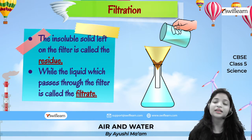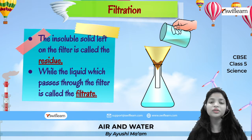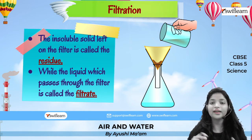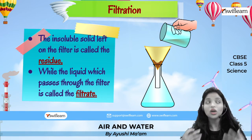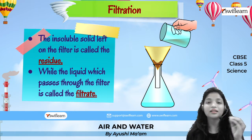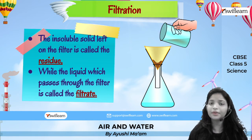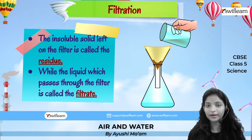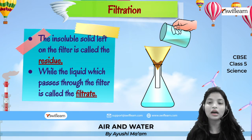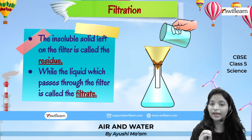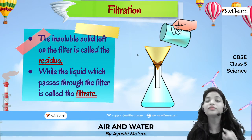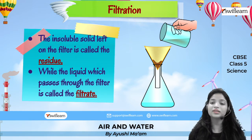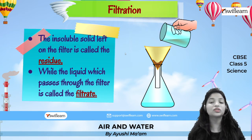Water is a universal solvent, which means it can dissolve solids and liquids — but not everything dissolved is good. There can be impurities like sand and kankar present in water which we don't want. If the kankar particle size is bigger than the filter paper pores, it gets stopped on the filter paper and the water flows down clean. That is how the filtration process works.